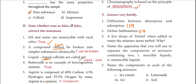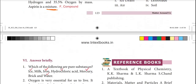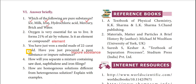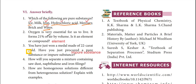Answer briefly. First question: examples of pure substances include HCl (hydrochloric acid), mercury, and water. Second question: oxygen forms twenty-one percent of air by volume — is it an element or a compound? Oxygen is an element.